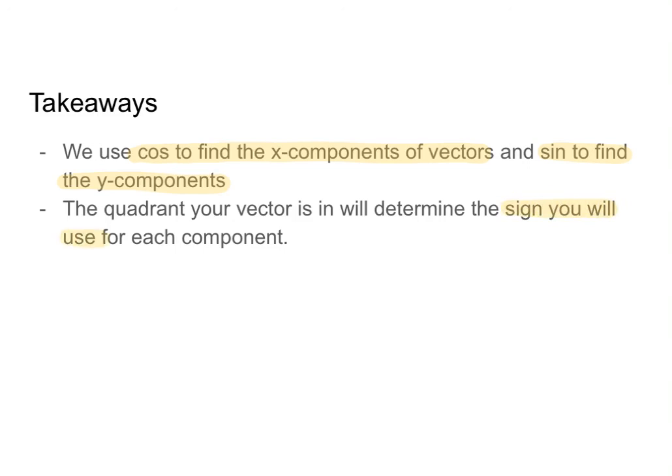Secondly, the quadrant your vector is in will determine the sign you will use. So going back to example number two, had I found x, x was pointing to the left, so I would have said that x was negative however many meters long it was rather than positive. So if I'm going north and east, we're going to be positive. If I'm going south and west, we're going to be negative. And that's something that you will hopefully get more and more used to the more of these problems you do. So with that being said, go ahead and solve some more problems. Best of luck and happy solving.